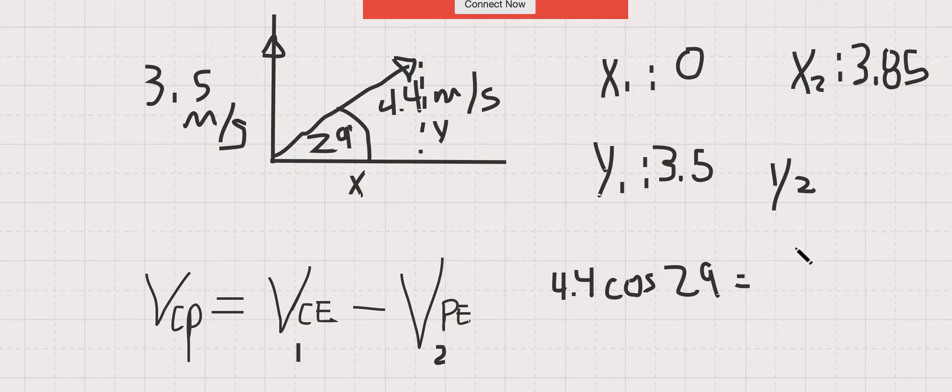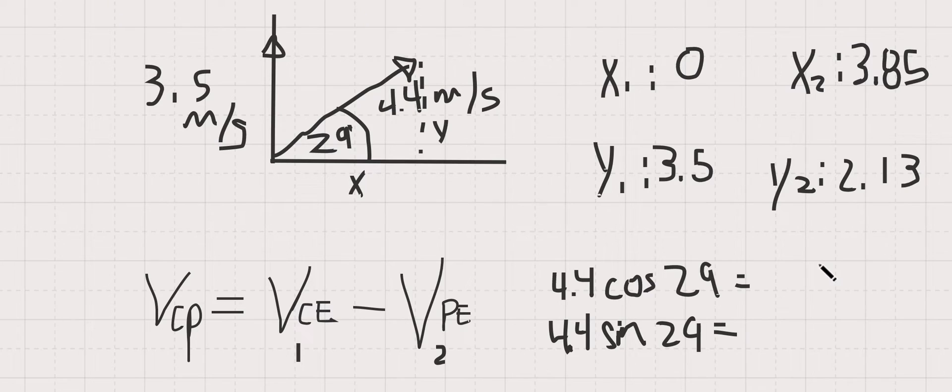That gives us 3.85 meters per second, and the y value is just going to be the sine of 29, opposite over hypotenuse, and that will give you a value of 2.13 meters per second.